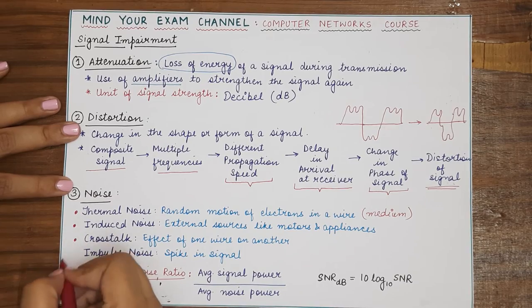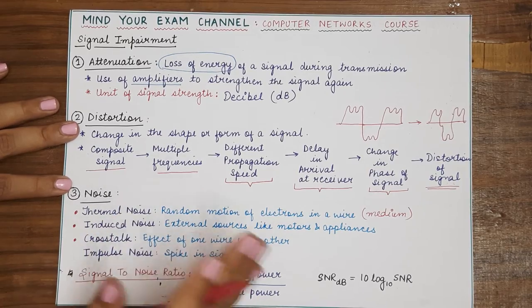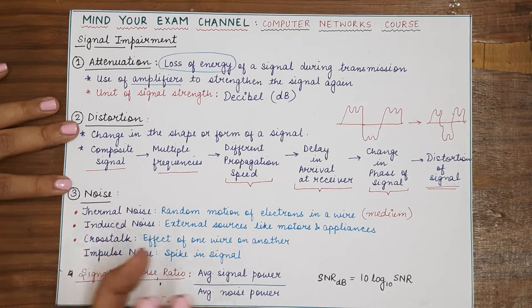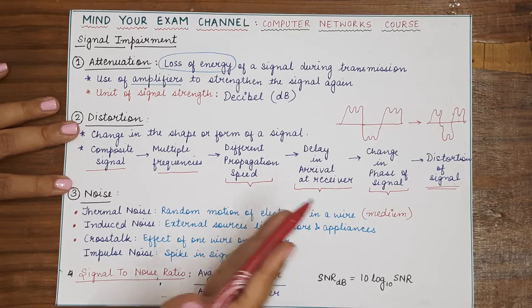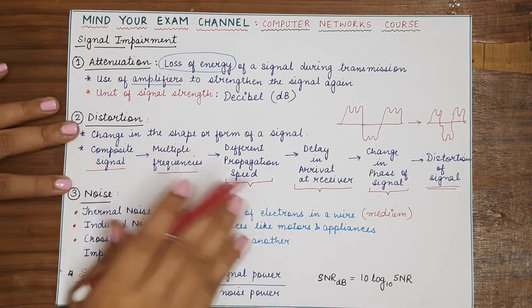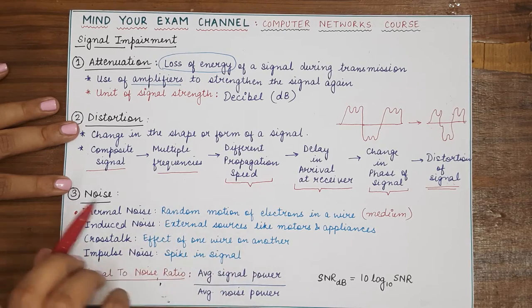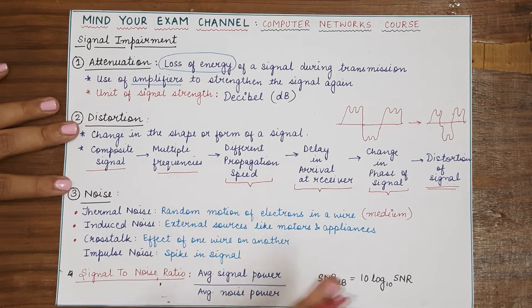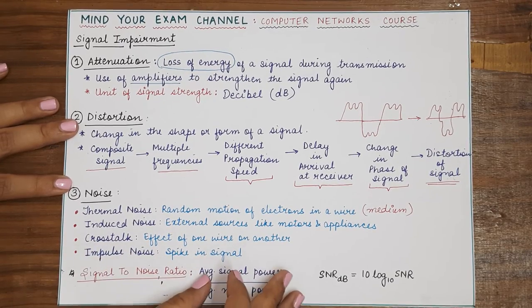The next is crosstalk. So, crosstalk basically is the effect of one wire over the other. So, there might be times when multiple wires are bundled together to form a single wire and in that case, multiple different wires lie very close to each other. So, the effect of the signal that is propagating in one wire over the signal that is propagating in another wire lying close by is known as crosstalk.